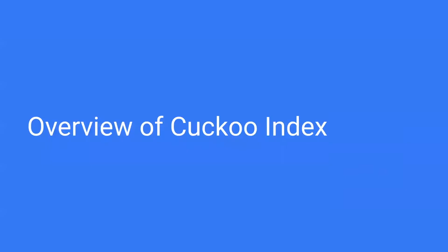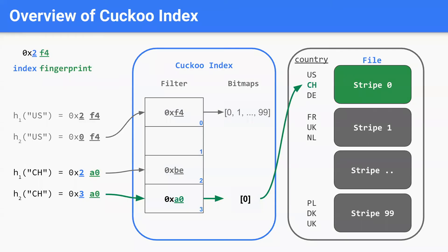On a high level, KUKU Index combines KUKU filters with bitmap indexing. A KUKU filter is essentially a KUKU hash table, with the difference being that keys are represented by a short hash value, also called a fingerprint. Also, keys in a KUKU filter do not have an associated value. In KUKU Index, each fingerprint stored in the filter is associated with a value — specifically, each fingerprint maps to a bitmap indicating qualifying stripes.